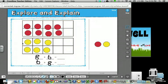So I go up here, this is a 10 frame, and this is a 10 frame. So we're going to make 8 red: 1, 2, 3, 4, 5, 6, 7, 8. Then the other addend is 6: 1, 2, 3, 4, 5, 6.